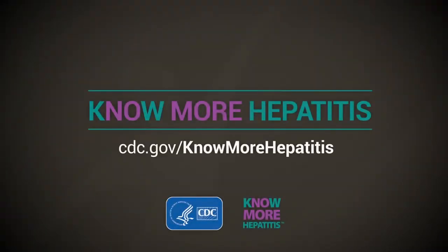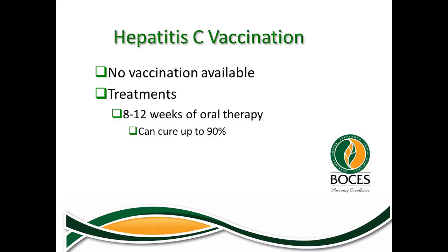People born from 1945 to 1965 are five times more likely to have hepatitis C. People can live for decades without symptoms, and left untreated, hepatitis C can lead to liver cancer. Treatments are now available that can cure hepatitis C — talk to your doctor about getting tested. There is currently no vaccination for hepatitis C, but oral therapy lasting 8 to 12 weeks has a 90% cure rate.